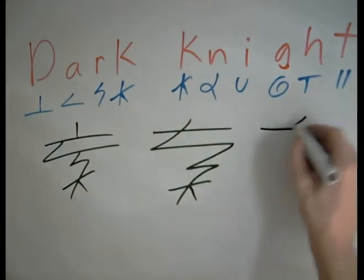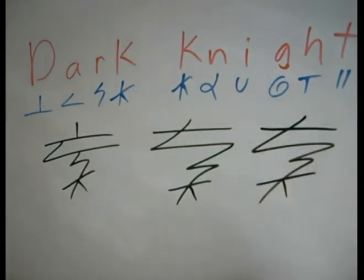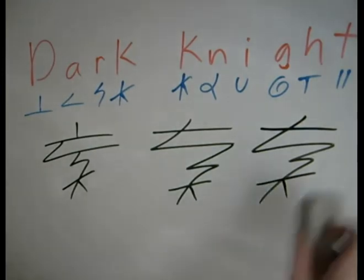Four strokes: one, two, three, four. Dark. Okay, that's simple. What else could we do to it?